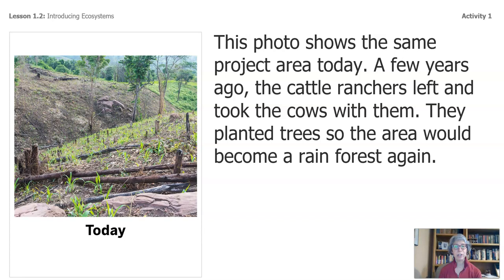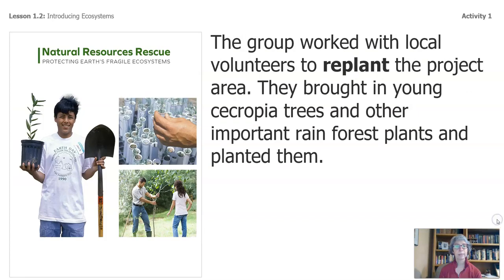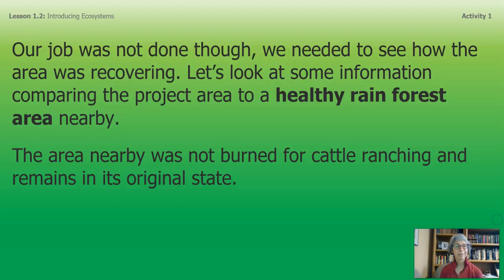This photo shows the same project area today. A few years ago, the cattle ranchers left and took the cows with them. They planted trees so the area could become a rainforest again. The group worked with local volunteers to replant the project area — they brought in young Cecropia trees and other important rainforest plants. Our job is not done though; we needed to see how the area was recovering. Let's look at some information comparing the project area to a healthy rainforest area nearby. The area nearby was not burned for cattle ranching and is in its original state.